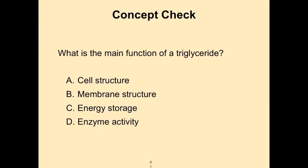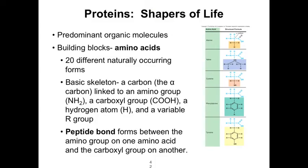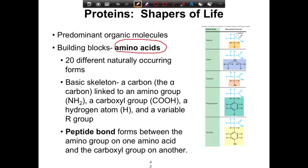Quick concept check: the main function of a triglyceride is energy storage. Now, as we review macromolecules, we'll look at proteins. Proteins are the molecules that really shape life — they provide structure or are active in doing things. They are the predominant organic molecules. Their monomers are amino acids and the polymer is a polypeptide. In carbohydrates, monosaccharides were bonded by glycosidic linkages; here, amino acids are held together by peptide linkages — also a covalent bond.